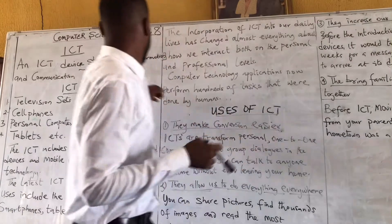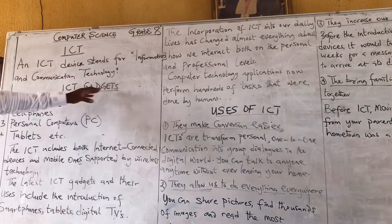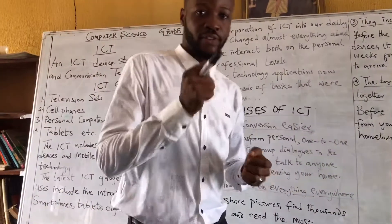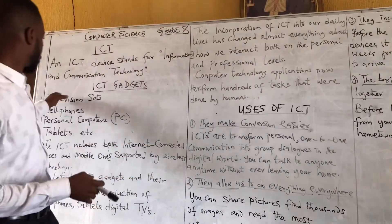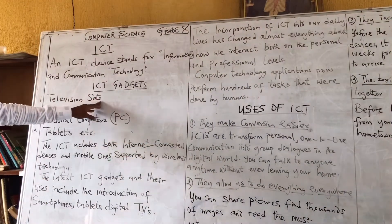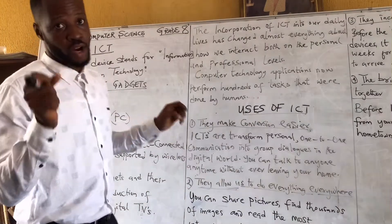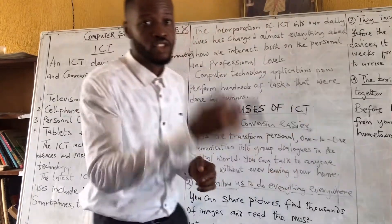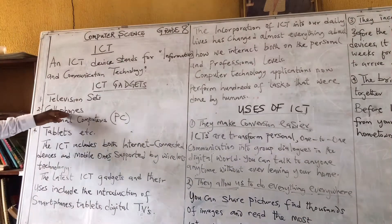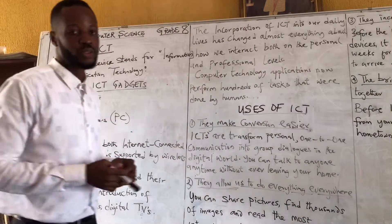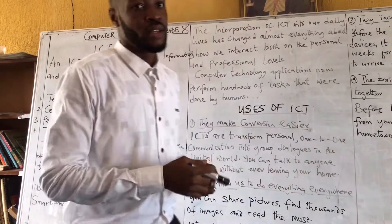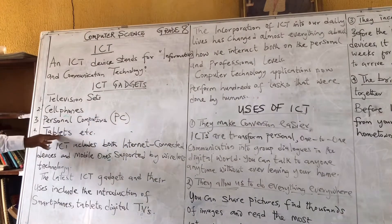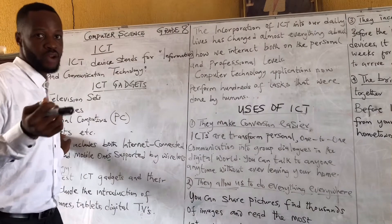Now let's talk about ICT gadgets — these are the devices you can use to get information and to communicate. The first one is the television set, which some of you have used in your houses to get information and to communicate to others outside. We also have cell phones and mobile phones used to communicate with one another, personal computers — which we call PCs — and tablets. Some of our parents have tablets at home.